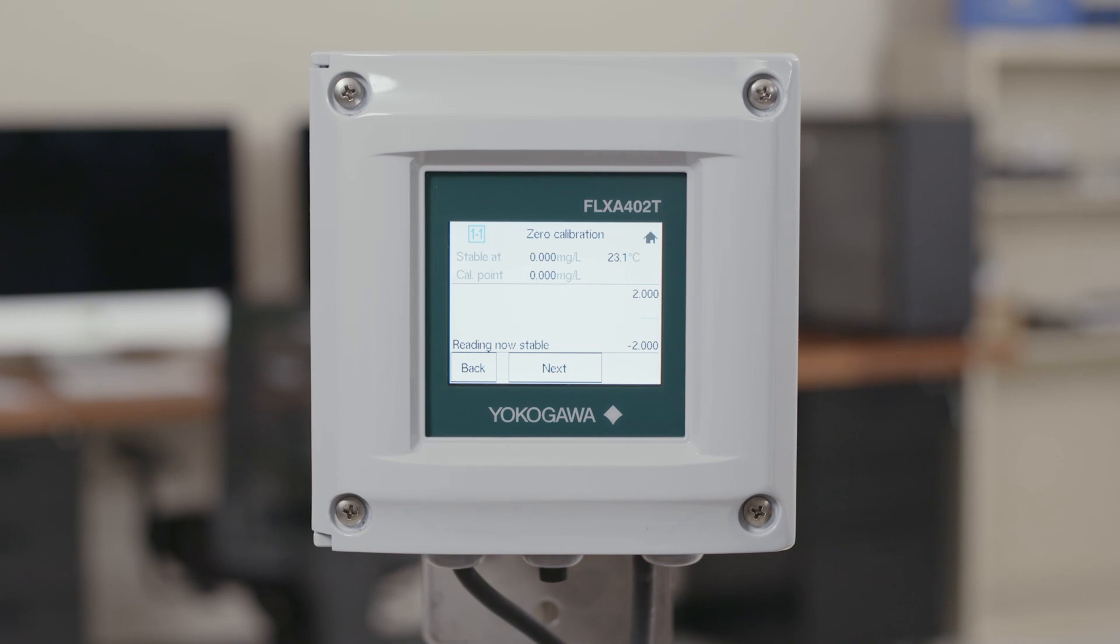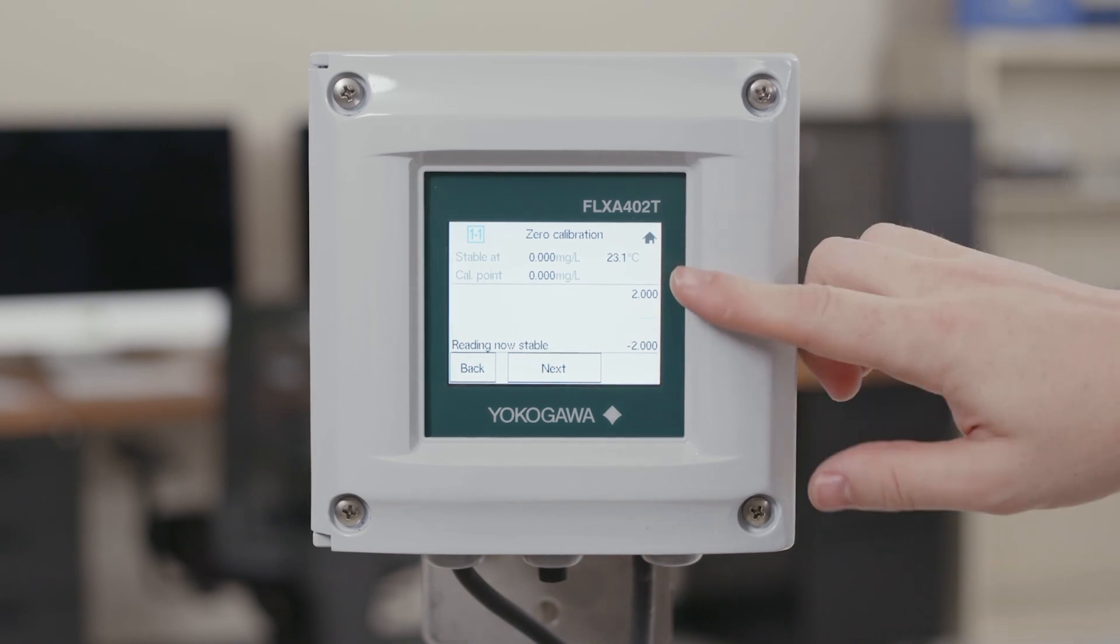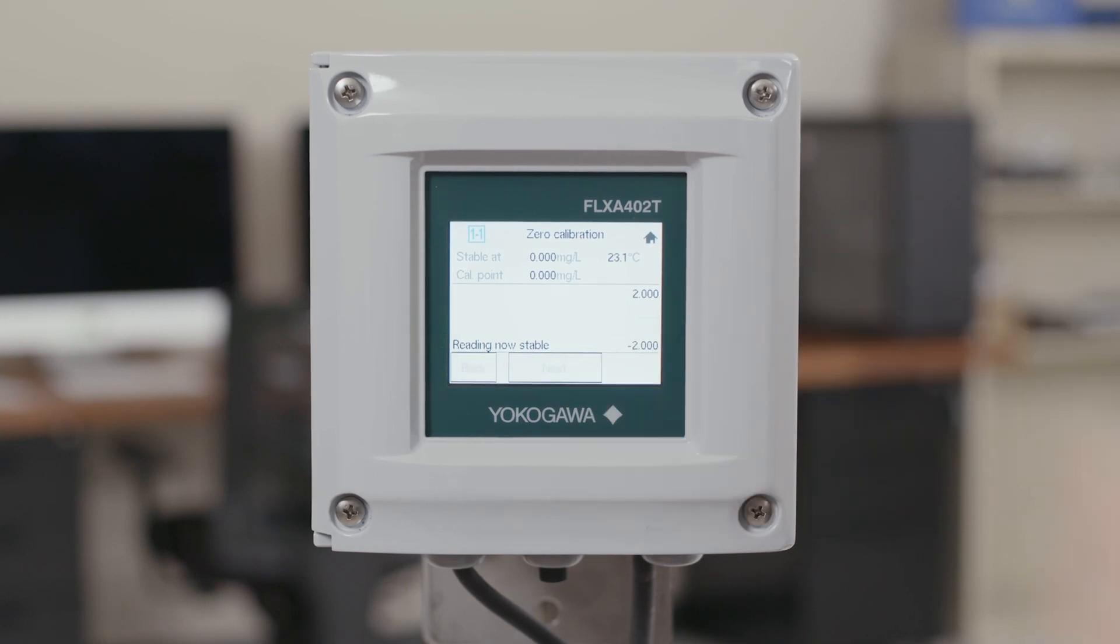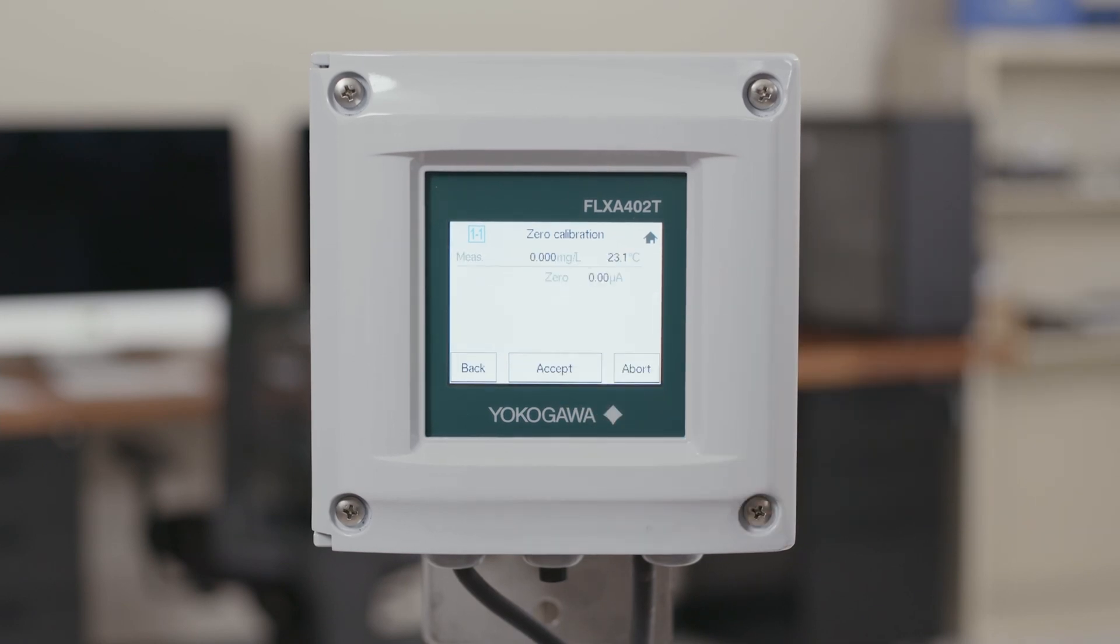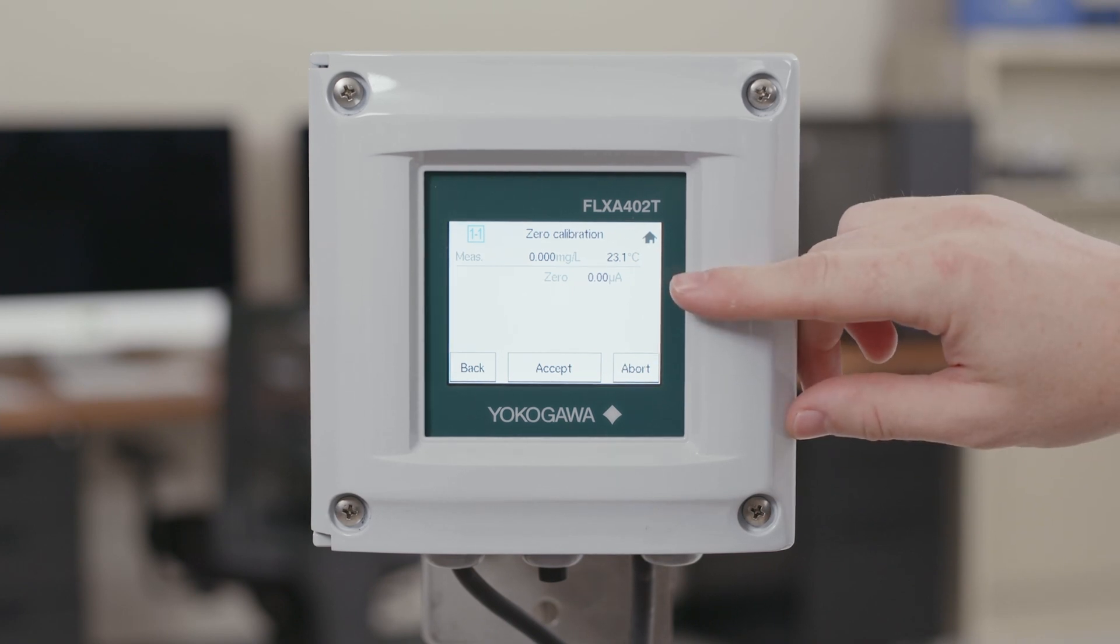This will set the calibration so you can see what your stable reading was, what your cal point is, which for the zero calibration should be zero. By clicking the next button it will take you to another screen that will show you what your zero point is and what your current measurement is.